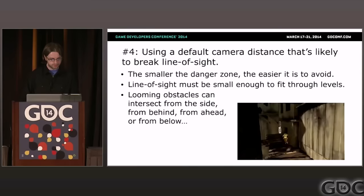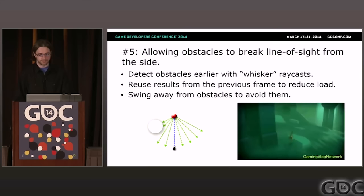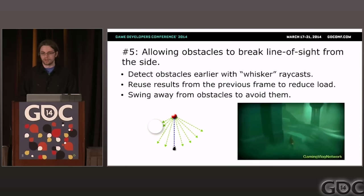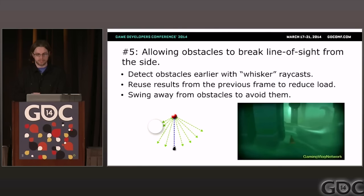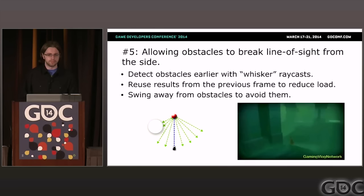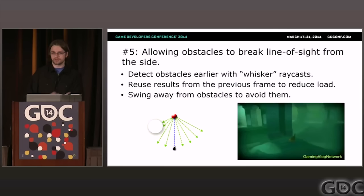Problem five: allowing obstacles to break line of sight from the side. The simplest fix is to detect occlusion by casting a ray from the avatar to the camera, and just push the camera closer to the avatar. But that is a camera cut, and if you're only changing the position, it violates the 30-degree rule — in cinema, all cuts should change the angle by at least 30 degrees. So it's much more pleasant when an obstacle is threatening to break line of sight to preemptively turn out of the way; in this case the camera swings right to avoid the obstacle on the left.